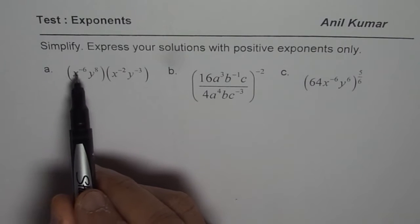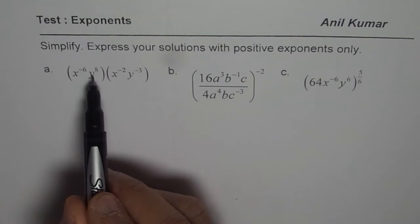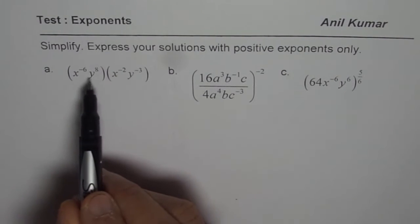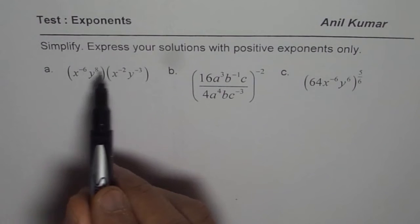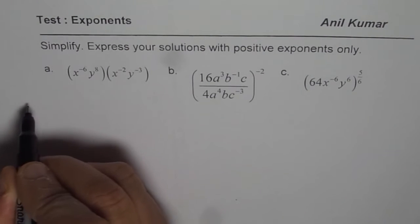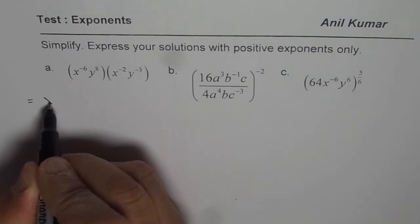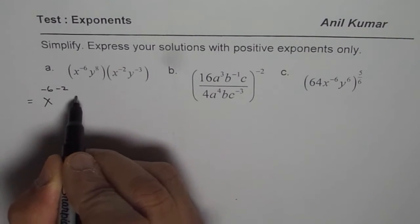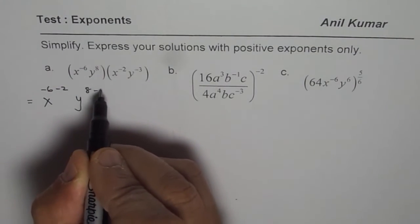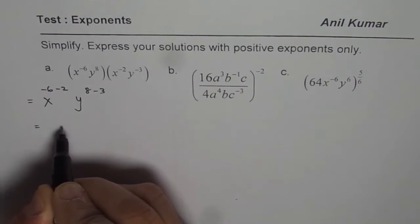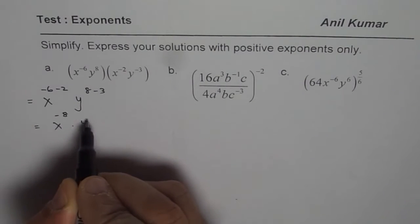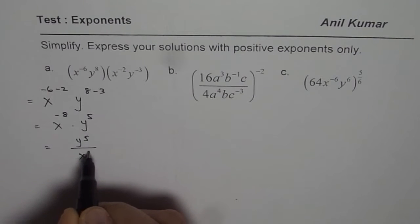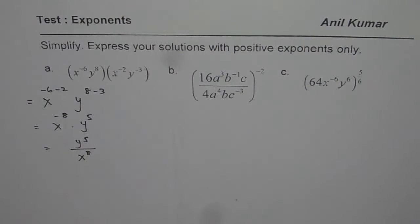The first one is (x^-6 y^8)(x^-2 y^-3). Whenever you multiply with the same base, the exponents get added. We will use that rule. So it is x to the power of -6 plus -2, which is -8, and y to the power of 8 plus -3, which is 5. That gives me x^-8 times y^5, or y^5 over x^8. Now we have written them with positive exponents.